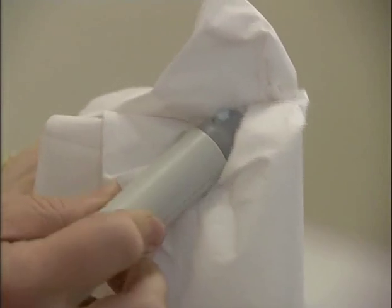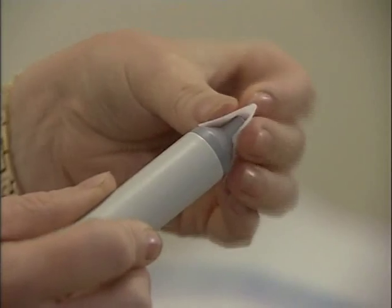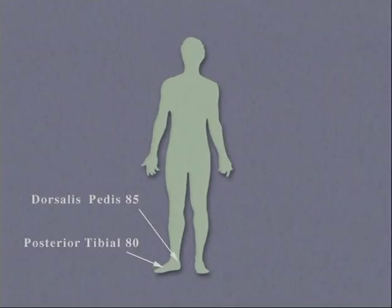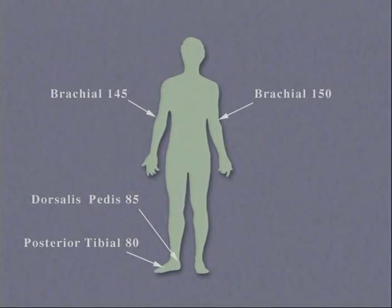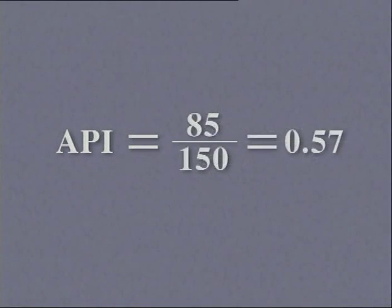Having completed the examination, excess gel is wiped from the Doppler probe immediately after use. The probe is cleaned with an alcohol impregnated wipe to reduce the risk of cross-contamination. In this example, the ankle pressures for the right leg were 80 and 85 and the brachial pressures were 145 and 150. The ankle pressure index is calculated by taking the higher ankle pressure reading of the two pulses in one leg, that is 85, and dividing it by the higher brachial pressure reading, in this case 150. The API is therefore 0.57.